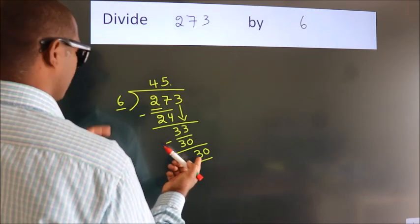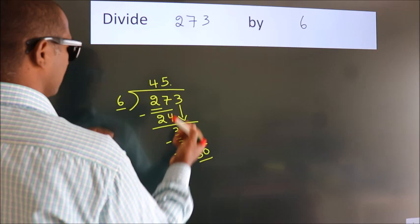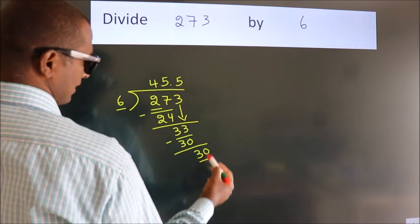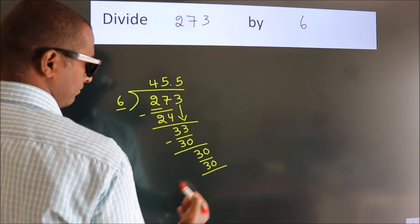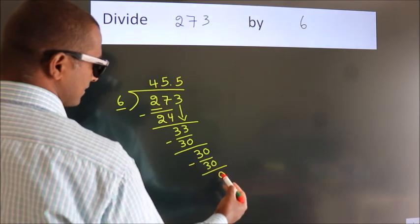When do we get 30? In the 6 table, 6 fives is 30. Now we subtract. We get 0.